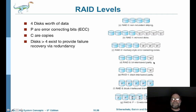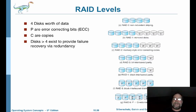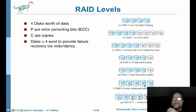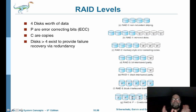You still get a good level of speed from bit interleave parity. The downside is you have to stripe a bit at a time, which may not be as efficient. There's also block interleave parity, which works very similarly. The book also describes block interleave distributive parity and RAID 6, where redundancy and parity are scattered across all of the disks — giving you RAID 5 and RAID 6.